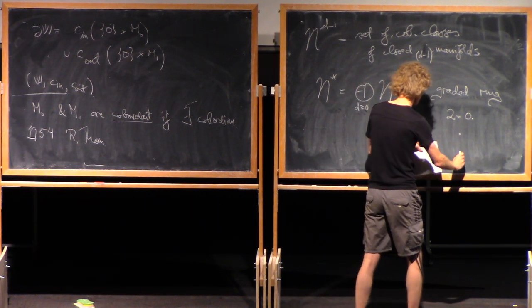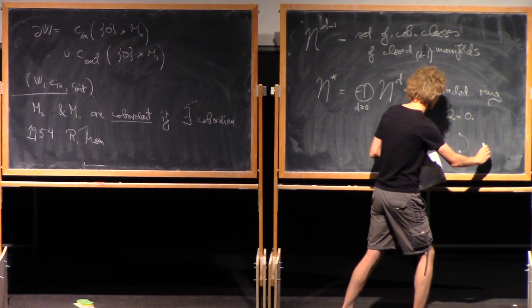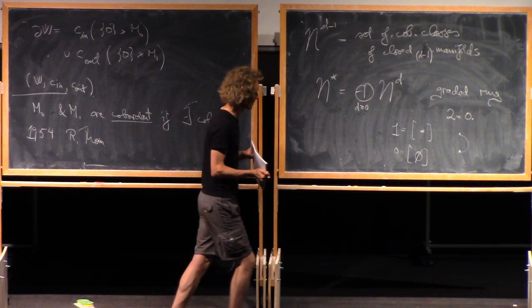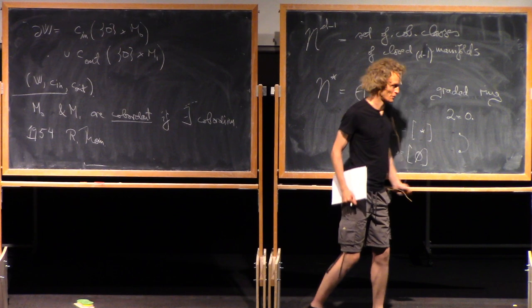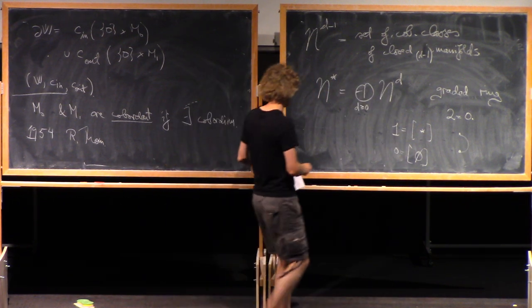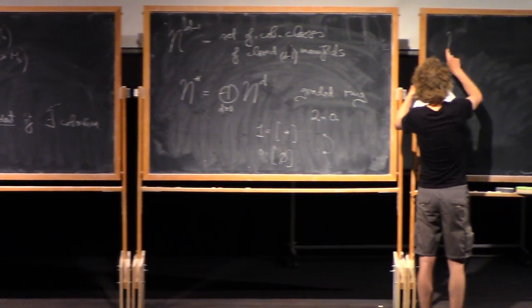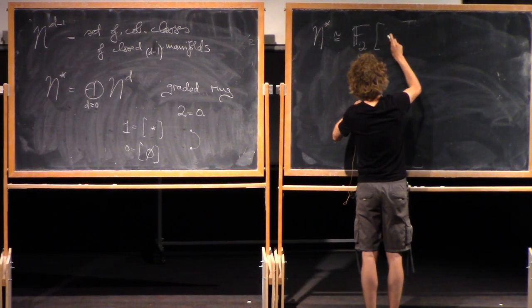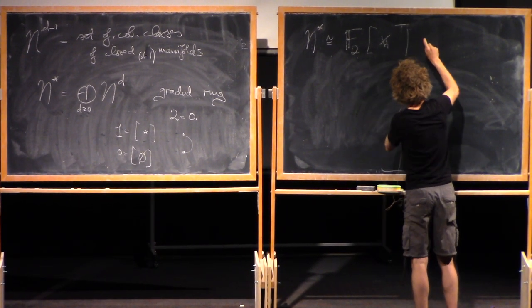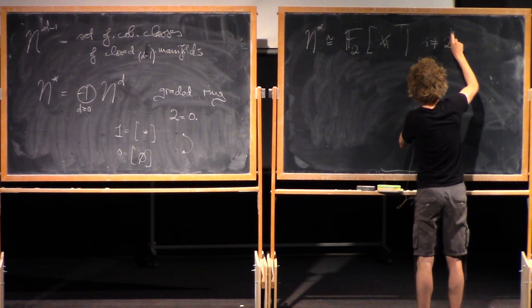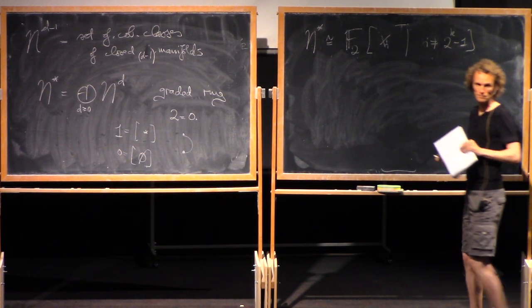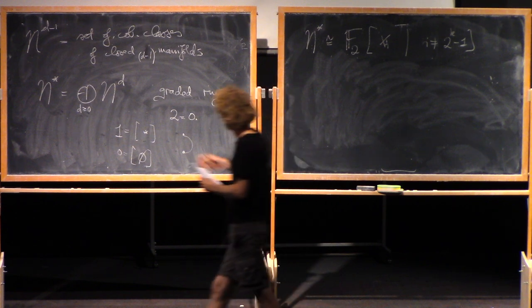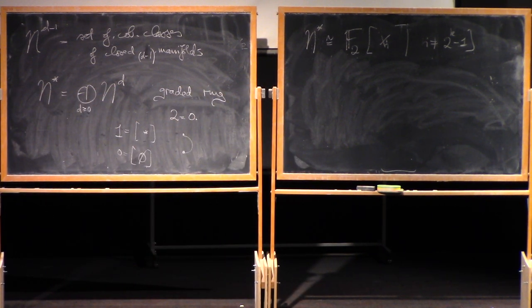Addition comes from disjoint union, product comes from Cartesian product of smooth manifolds. And also, 2 equals 0. The unit in this ring is the class of a point. If you take the disjoint union of that with itself, it's cobordant to the empty set. The empty set is an allowed manifold, and an interval is a cobordism from 2 to 0. And Thom's famous theorem is that this ring is isomorphic to a polynomial ring over the field with two elements in one generator in each degree, except those that are of the form 2 to the k minus 1.